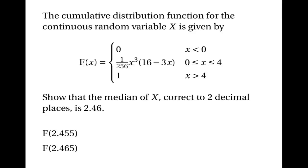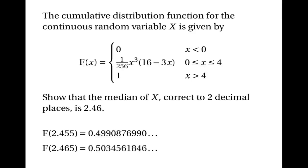We work out these cumulative probabilities by substituting the values into the CDF. F(2.455) turns out to be approximately 0.4990876990, and F(2.465) turns out to be approximately 0.5034561846. Since the cumulative probability at 2.455 is less than a half and at 2.465 is more than a half, the median is definitely somewhere between 2.455 and 2.465, and therefore it rounds to 2.46 to two decimal places.